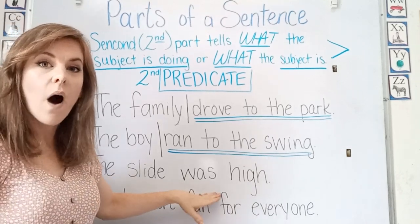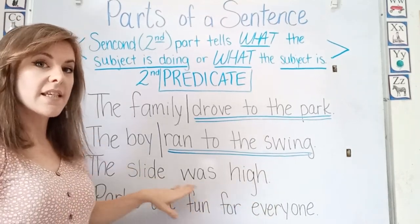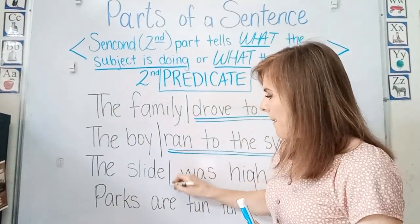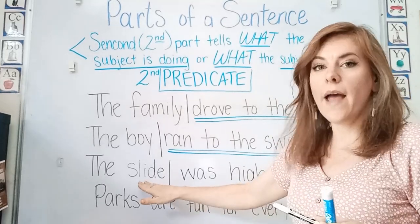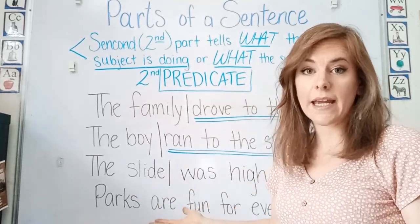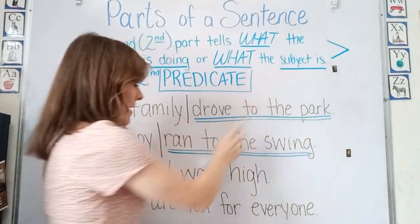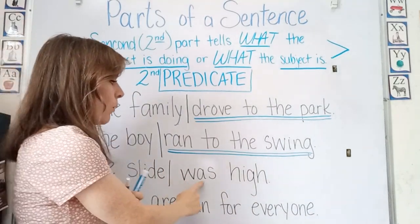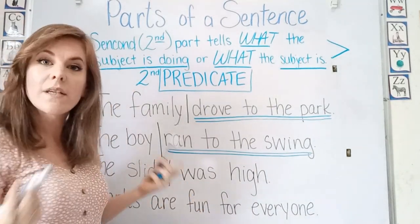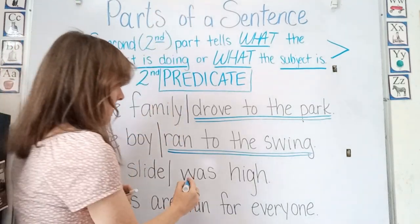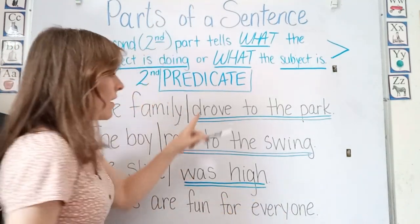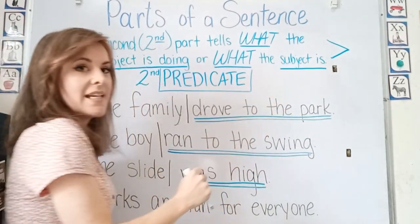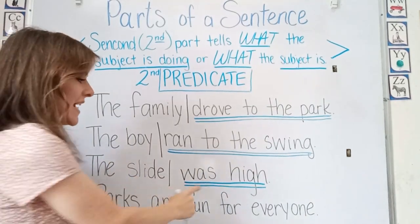The slide was high. Now, slide is our subject. But it's not telling us what the slide did — it is telling us what the slide is. It is high. The slide was high. So what was the slide? It was high. So this is our predicate part; it is telling us what the slide is. Slide is our subject, and it is high.